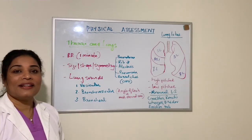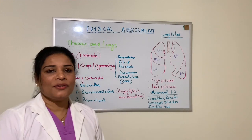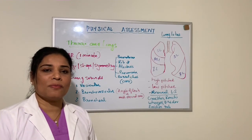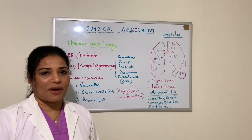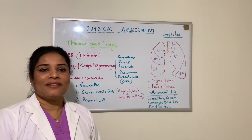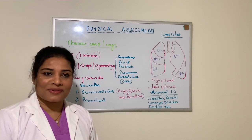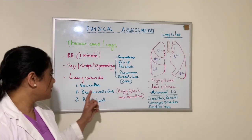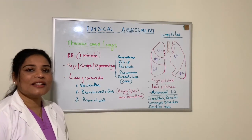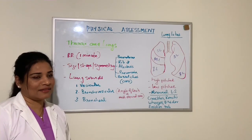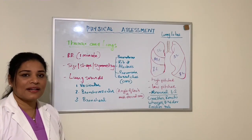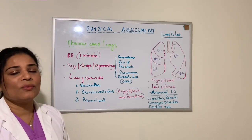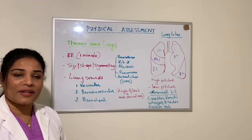Let's talk about the lung sounds. Use your stethoscope and place it on your landmarks to listen to the lung sounds. There are mainly three types of normal lung sounds: the first one is vesicular, the second one is bronchovesicular, and the third one is bronchial.